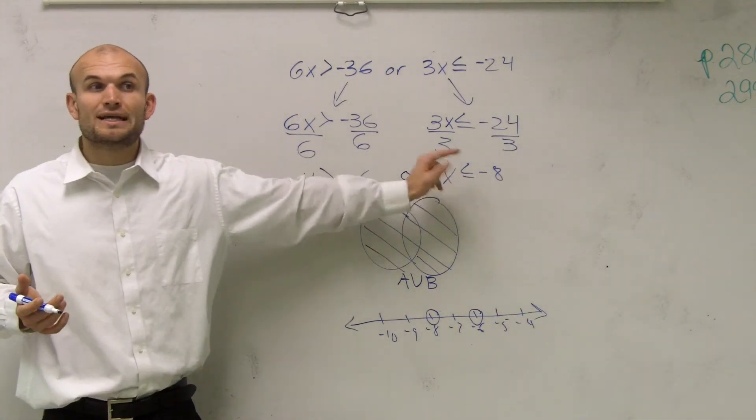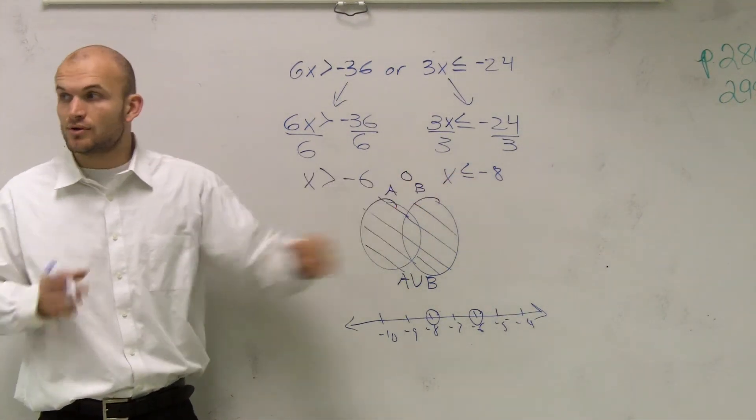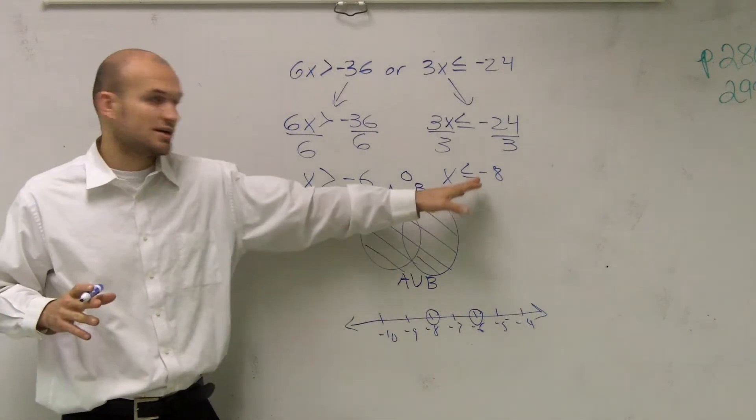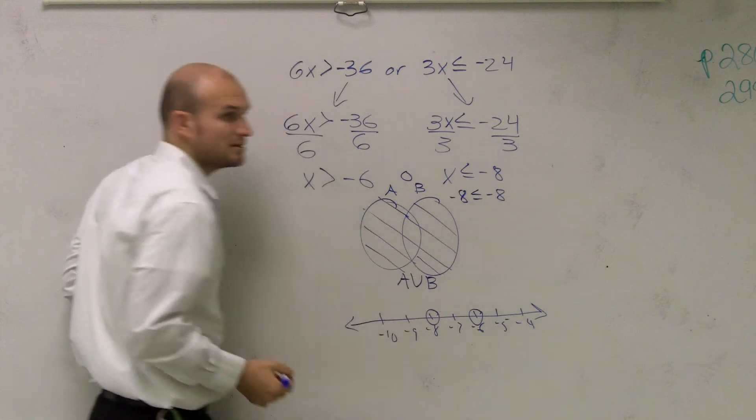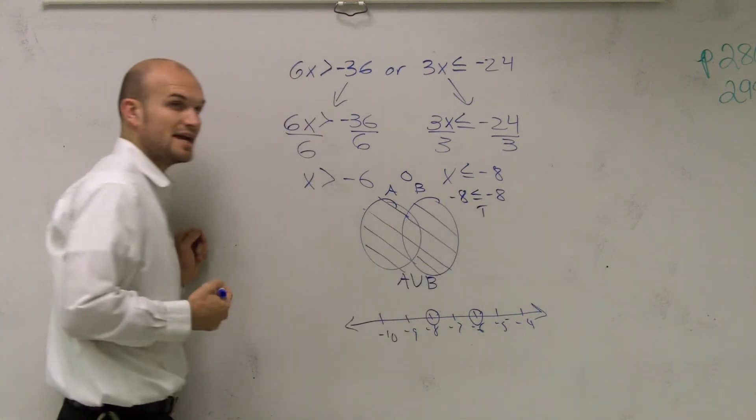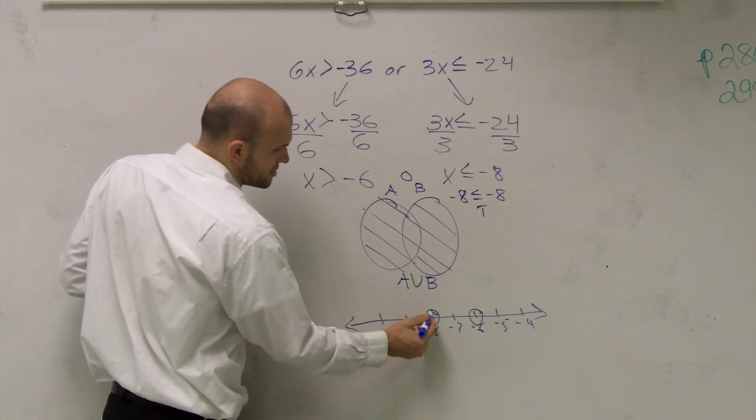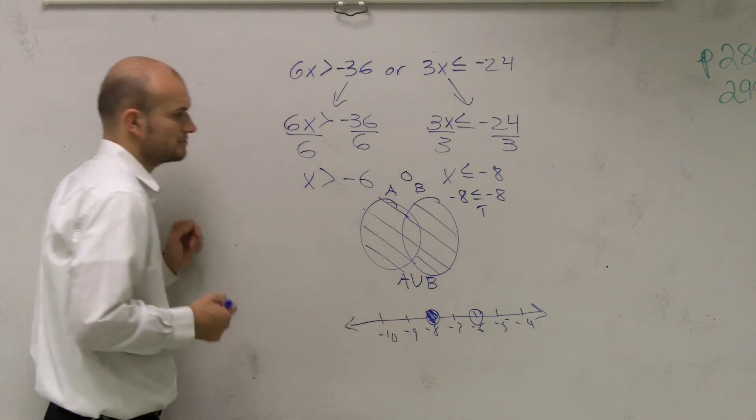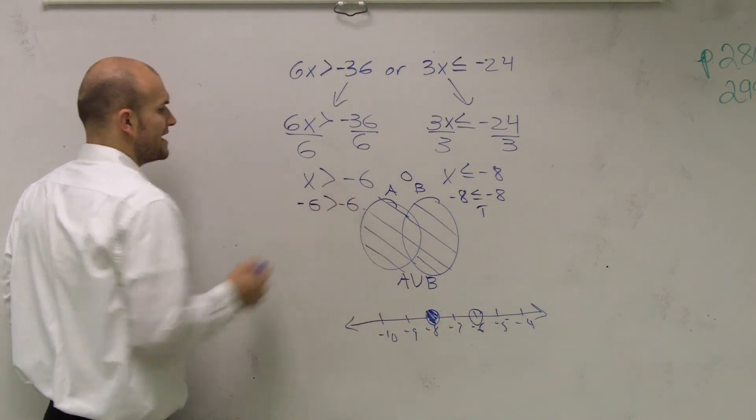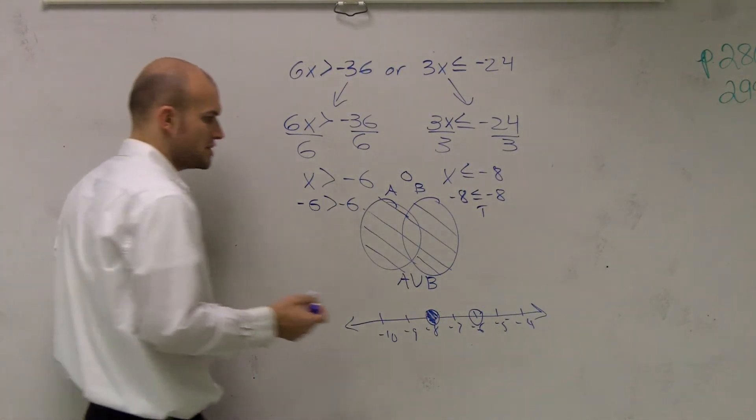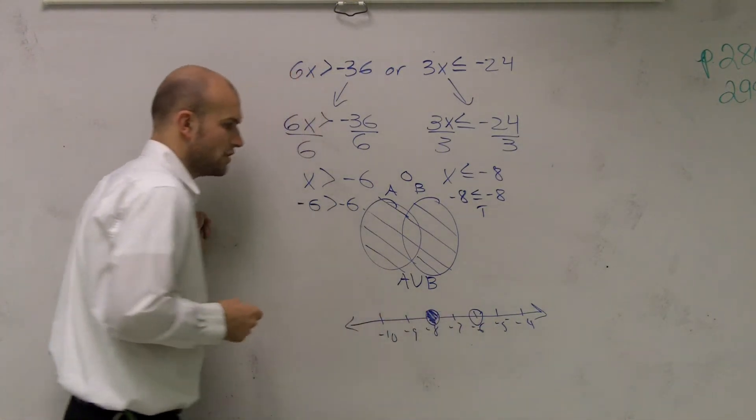Remember, whenever it's less than or equal to, or greater than or equal to, that means it's a closed circle. It makes your inequality true. Because look at it. Negative 8. Is that less than or equal to negative 8? That's true because negative 8 is equal to negative 8. So I'm going to fill that in. Then, if I tested negative 6, is negative 6 greater than negative 6? The answer is obviously no. So that one's false, so we leave it open.